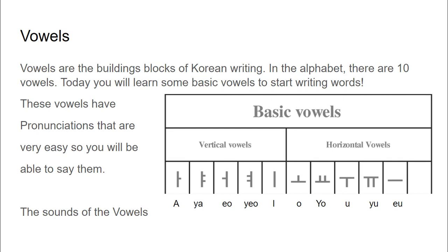For the vertical vowels they are A, YA, U, YU, and E. For the horizontal vowels they are O, YO, U, YU, and E. Don't forget — vertical vowels are up and down, horizontal vowels are left to right. The horizontal goes down while the vertical goes up.